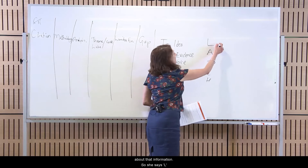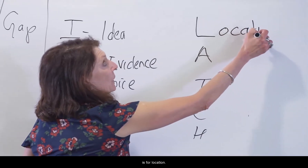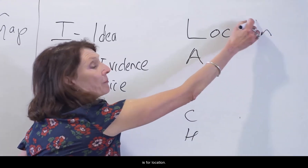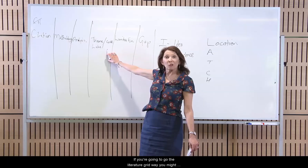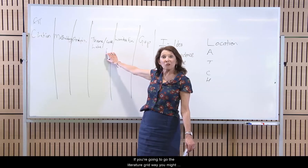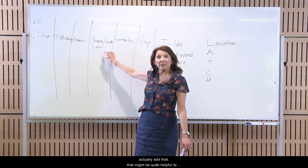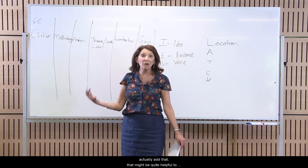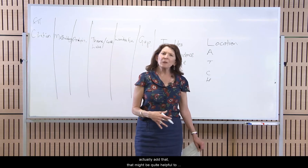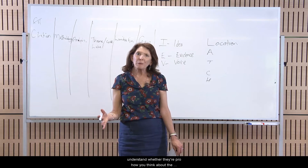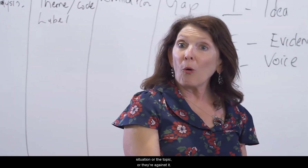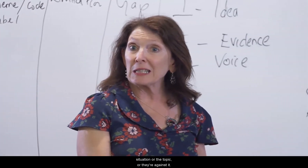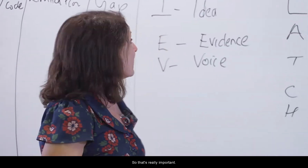L is for location — where is the author located in the debate? If you're going to use the literature grid approach, you might add that, as it can be quite helpful to understand whether they're pro or against how you think about the topic.